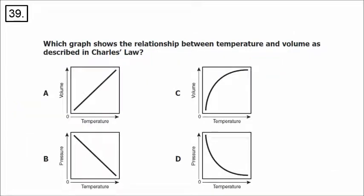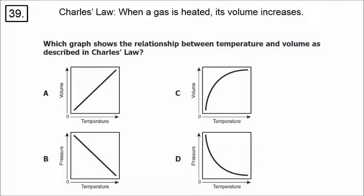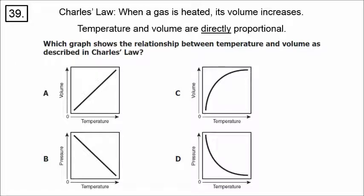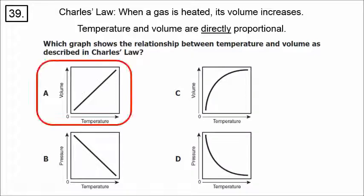Number 39: what is the relationship between temperature and volume as described in Charles' law? If you heat a gas, the volume increases. For example, a balloon gets hotter and expands. That is a direct relationship — a straight line going up, not down. A direct relationship between temperature and volume means the correct answer is A.